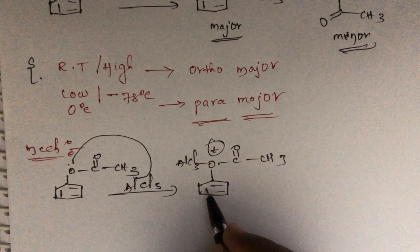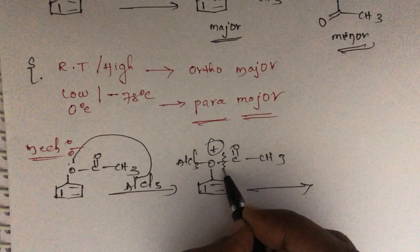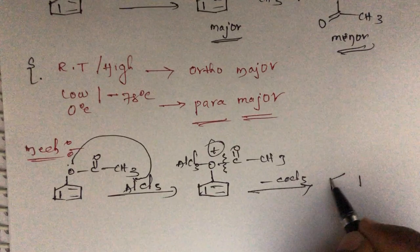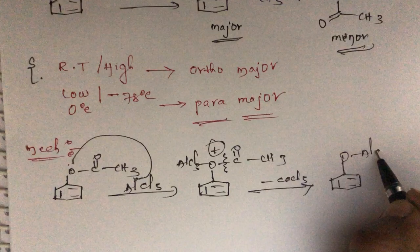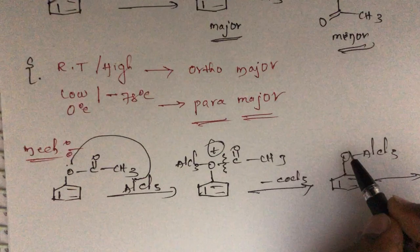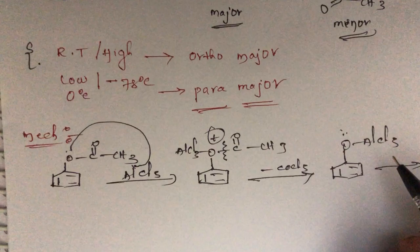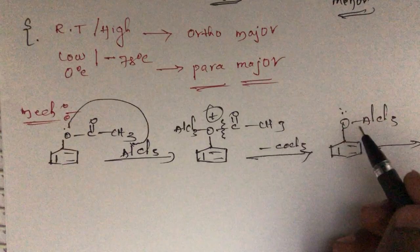Under heating conditions, the COCH3 group will leave as a carbonyl compound. Then we get the phenoxide intermediate with O-AlCl3. We write the resonance structures to see which products will form and what are the probable compounds we get.